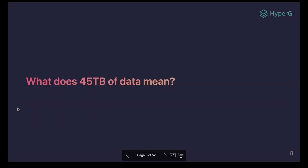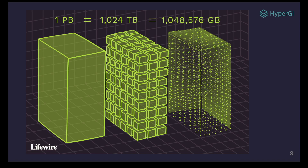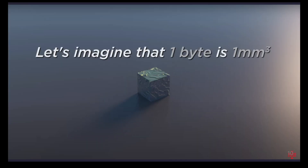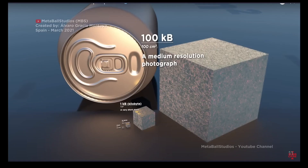So what does 45 TB of text data mean? If you look at the following image, you can see that 45 TB of text data is a lot. 1 PB is 1024 TB, which is around 1 million gigabytes. So let's imagine 1 byte is 1 cubic millimeter — the following image shows a comparison between 100 KB and 1 TB. I hope this gives you a better idea of how big 45 TB is.